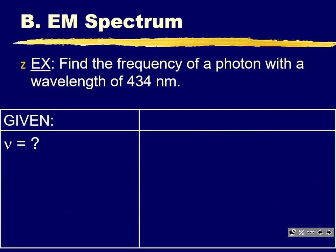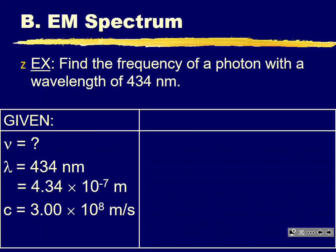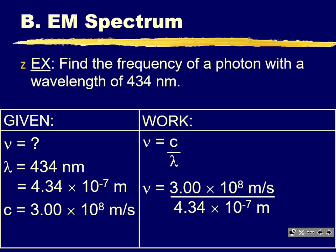Running through the setup again: write your given values, convert nanometers to meters, write down the speed of light, then manipulate the equation to isolate your variable. If given a wavelength in nanometers, you must show the conversion to meters before plugging into the equation.